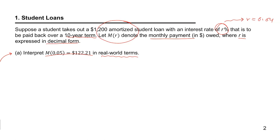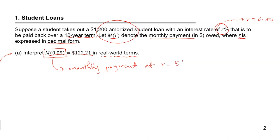What would you say? The first thing I'll point out is that the left-hand side is the value of the function M of R when R equals 0.05. This part represents the monthly payment of the loan at an interest rate of 5%. That 0.05 is R percent written in decimal form.